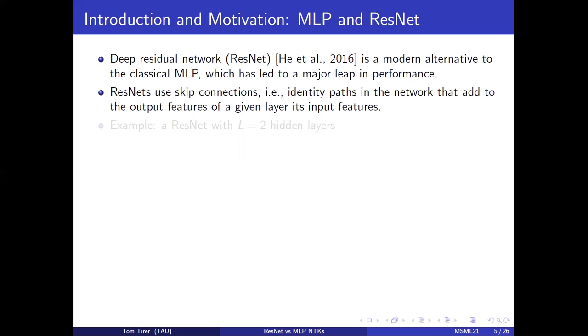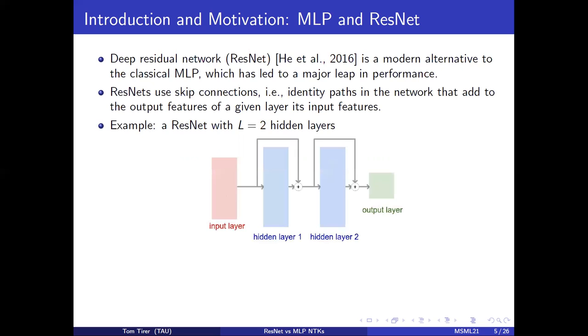ResNets use skip connections, which are identity passes in the network that add to the output features of a given layer its input features, as can be seen here for a network with two hidden layers.